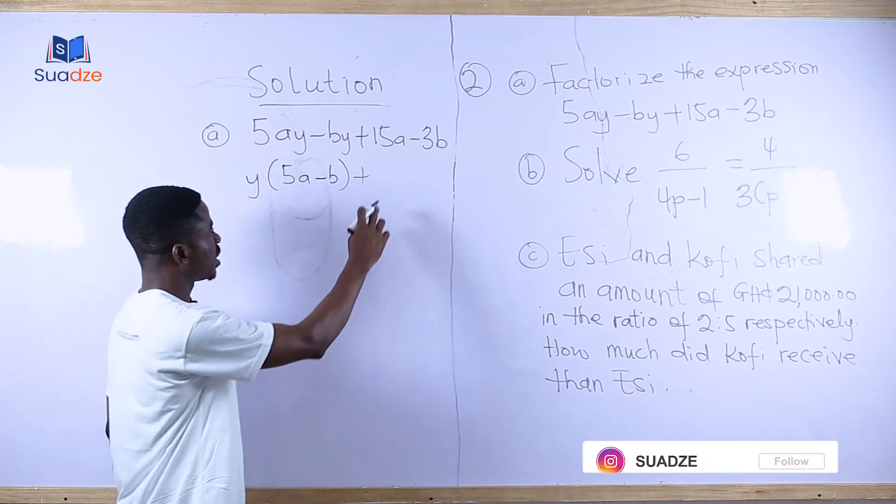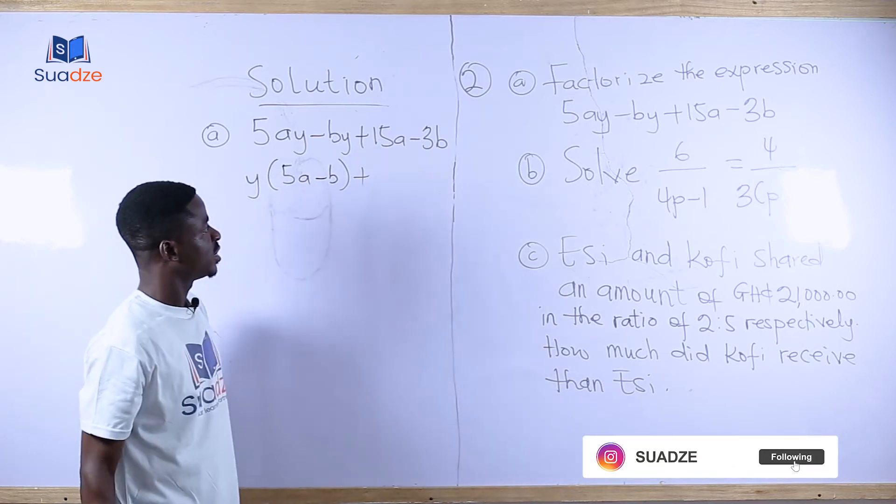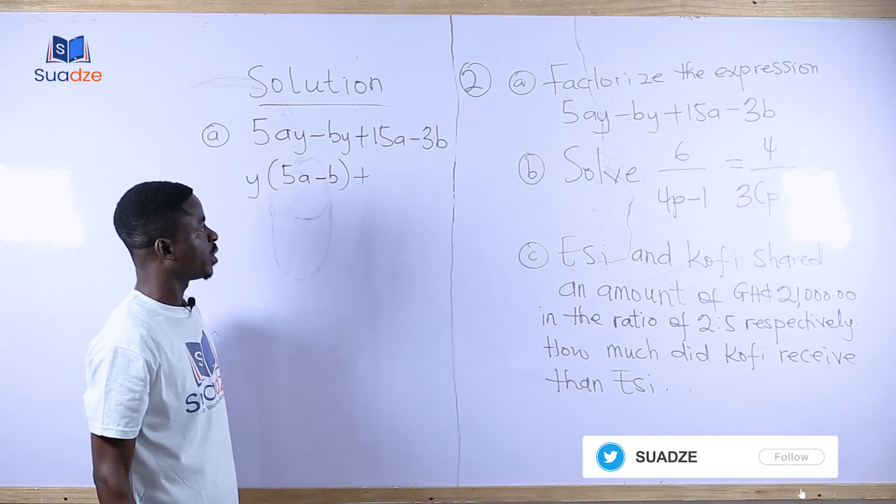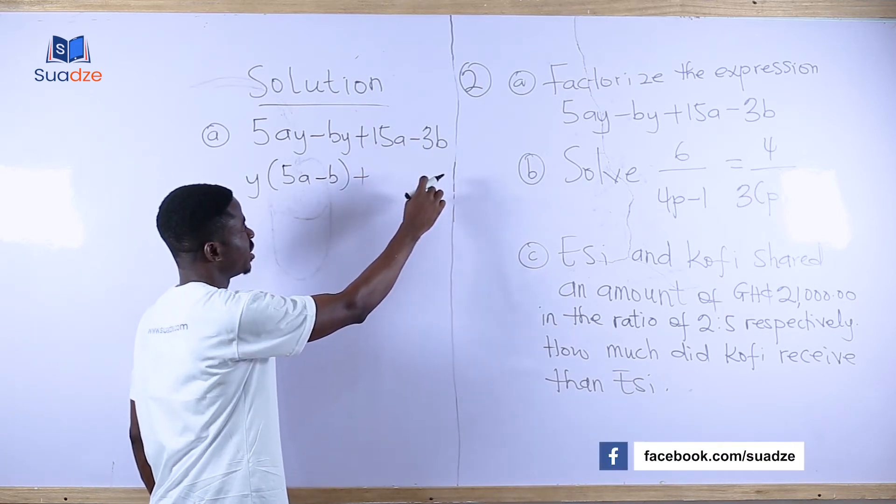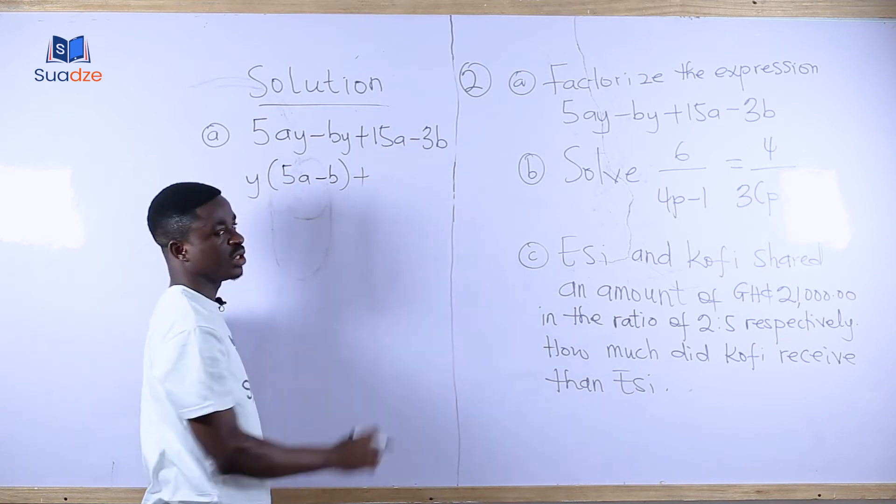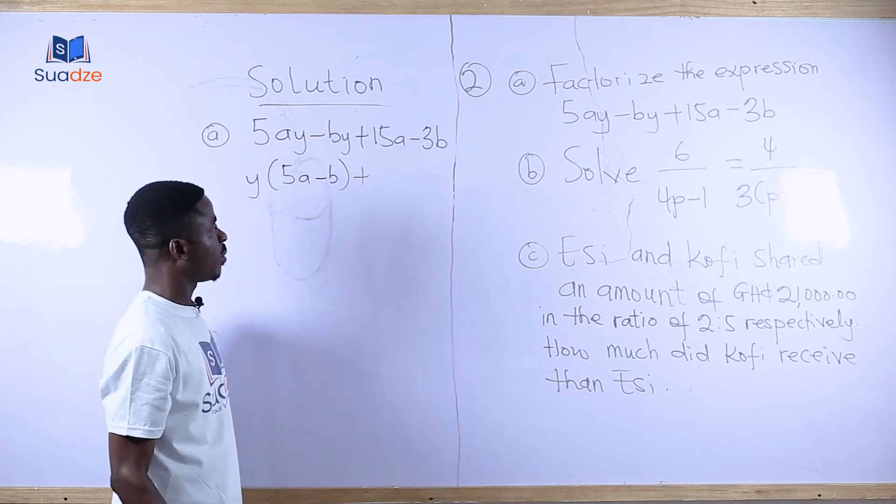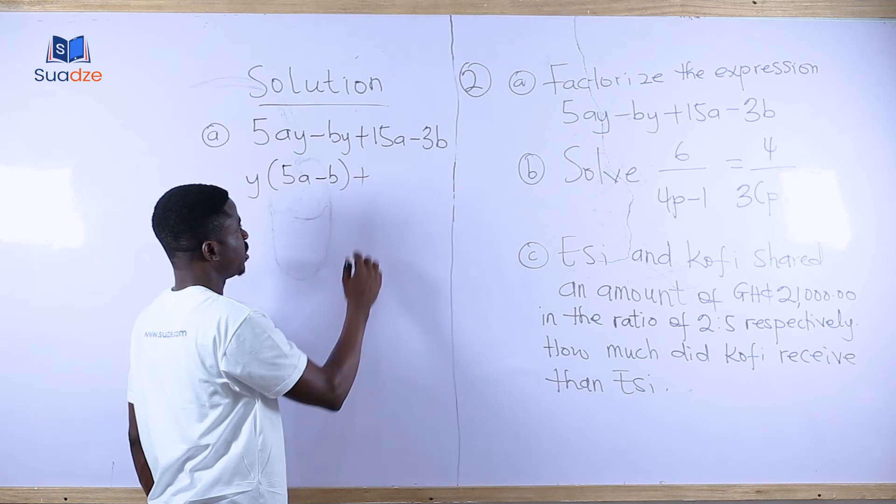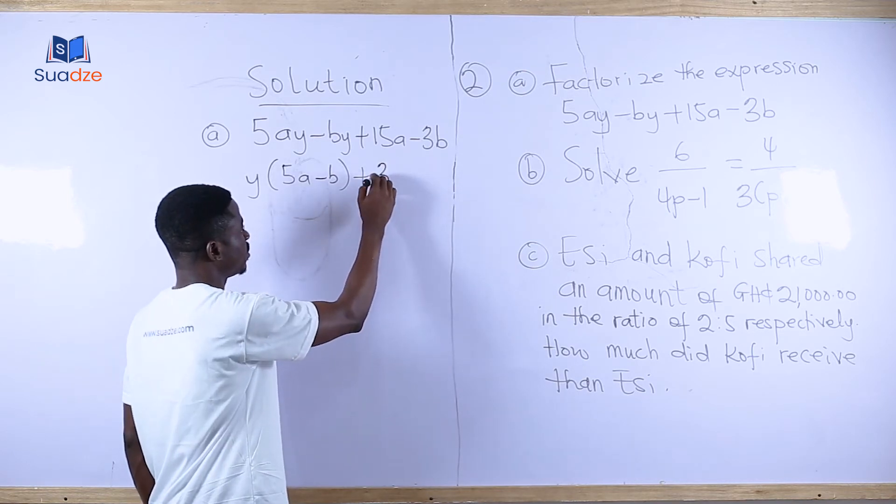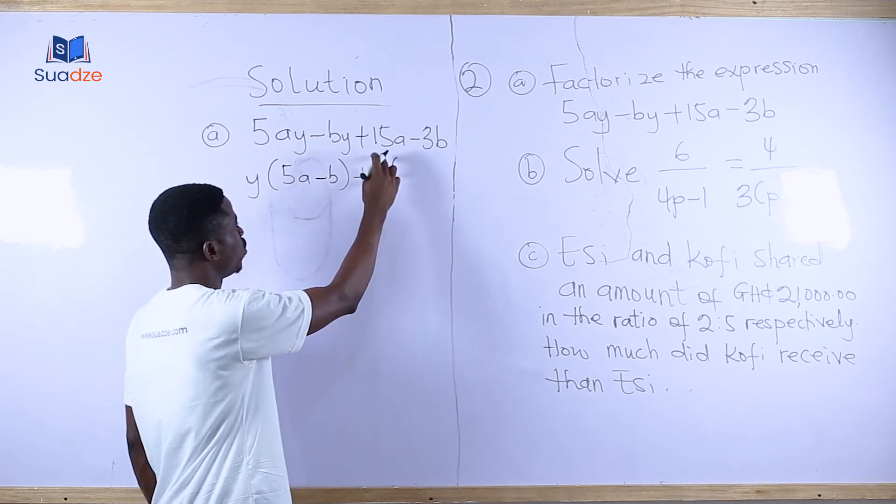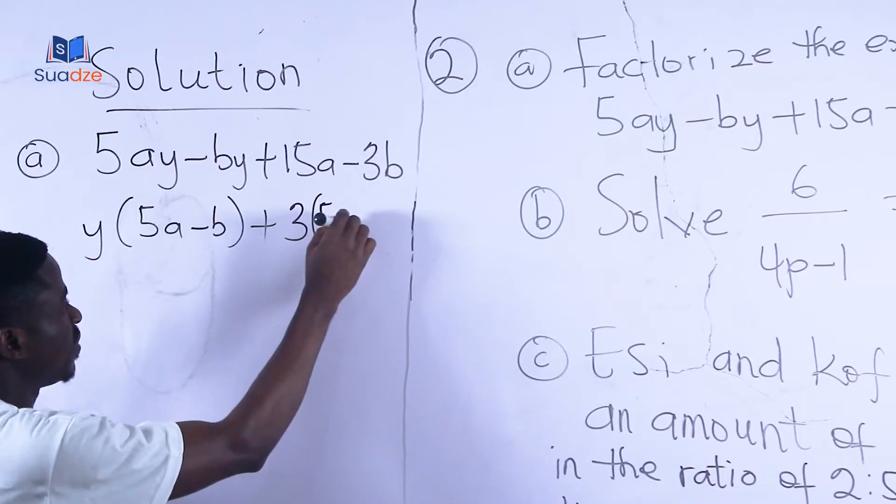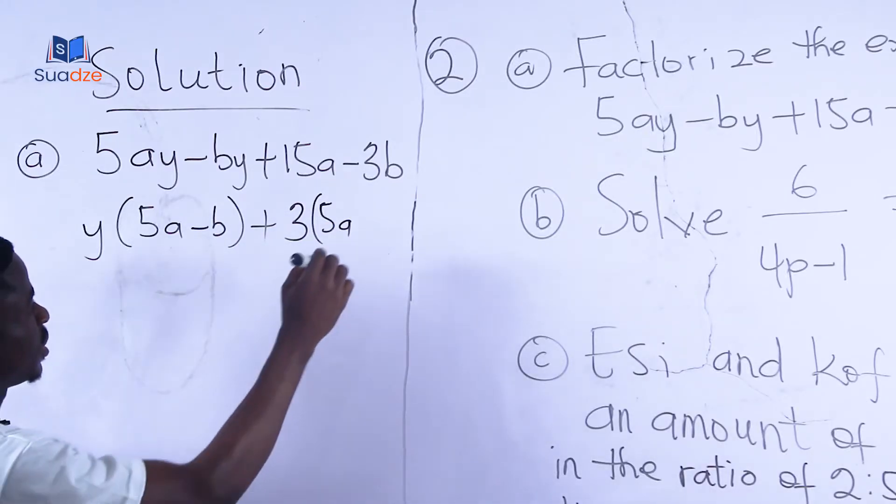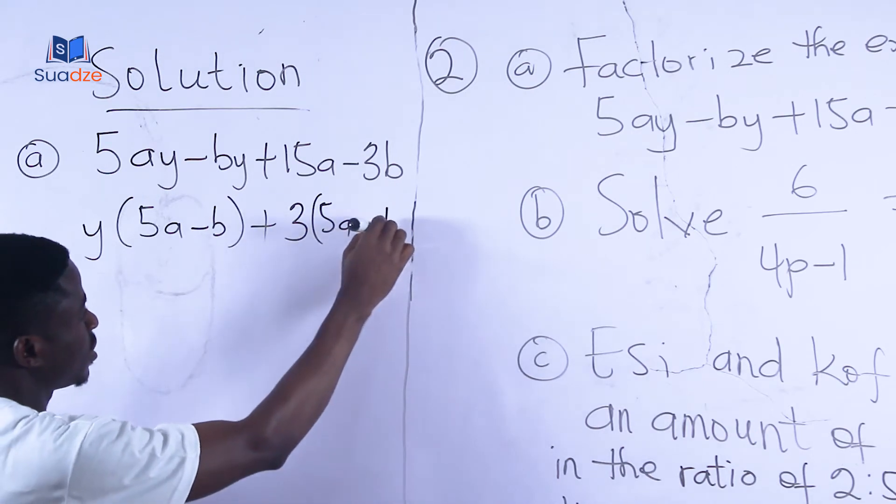Plus, and then we look at the second expression. We look at the common term among them. There is a here and there is no a here. There is b here and there is no b here. So the common term among them is 3. You factorize 3 here. 3 goes into 15 five times. So you'll be left with 5a minus b.